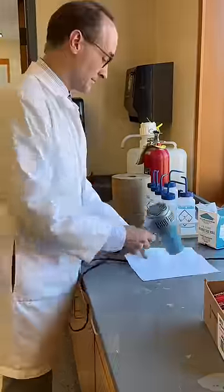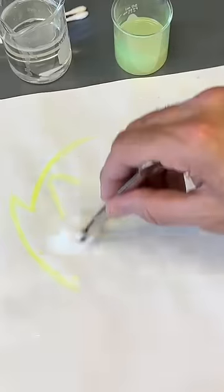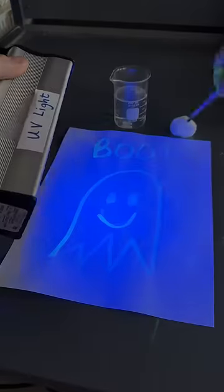To make the ink reappear, wet the paper with a solution of sodium carbonate. This reaction is especially cool under a blacklight, and is perfect for Halloween because the fluorescence changes too.